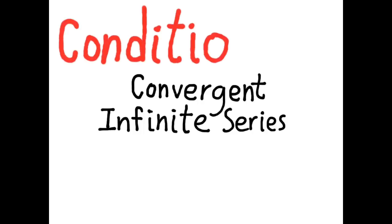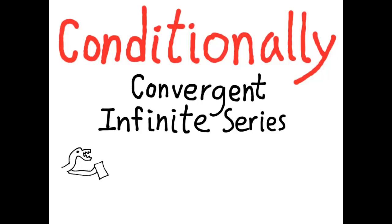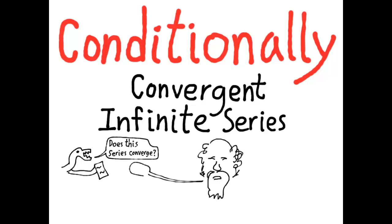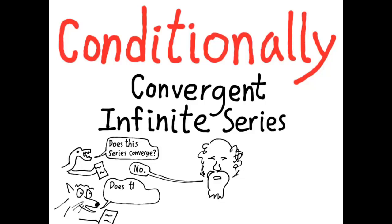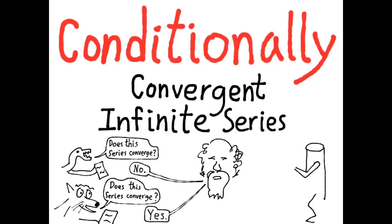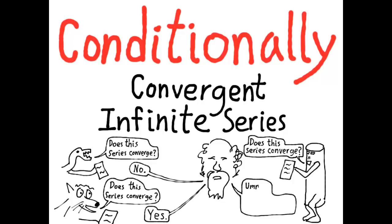We've been talking about infinite series and the question of whether an infinite series converges or diverges. Now we're going to talk about what's called conditionally convergent infinite series. Up till now, when asking does this series converge, the god of mathematics tells us yes or no — those are the only two answers. But now we'll have a type of series where the answer is sort of maybe, and there are some cases when it converges. That's a conditionally convergent series.